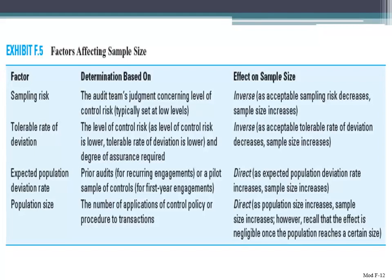Population size — the number of applications of a control policy or procedure to a transaction — has a direct relationship with sample size: as population size increases, sample size increases. However, that is not always the case. Once the population reaches a certain level, the effect becomes negligible. You can't look at population size as the only factor; you also have to consider your sampling risk, tolerable deviation, and expected population deviation rate.